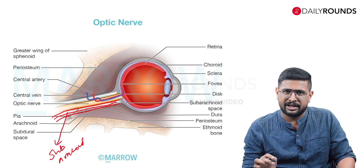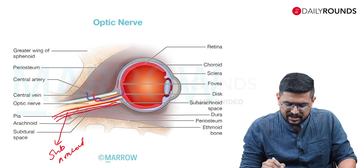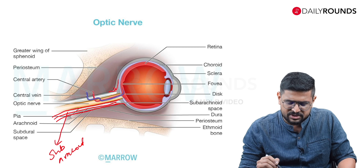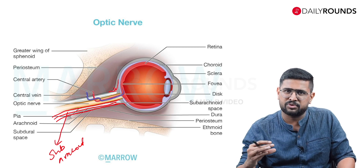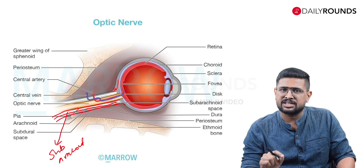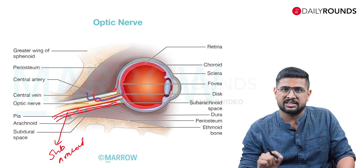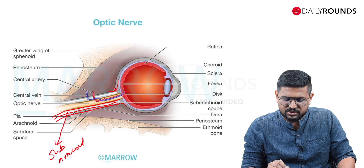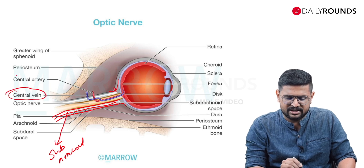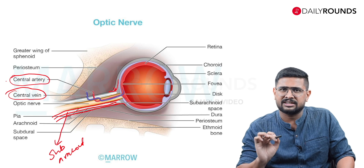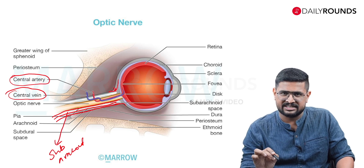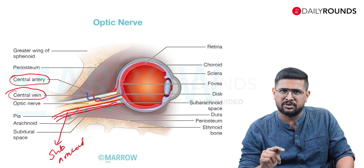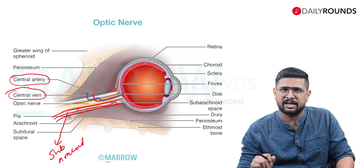Another anatomical point is that the sclera, when it continues into the optic nerve, has something called the lamina cribrosa — a sieve-like structure through which the optic nerve emerges. This has anatomical significance which we will see in a later slide. Also, there are two vessels running through the optic nerve: the central retinal vein and the central retinal artery, the utility of which we will see in upcoming slides.